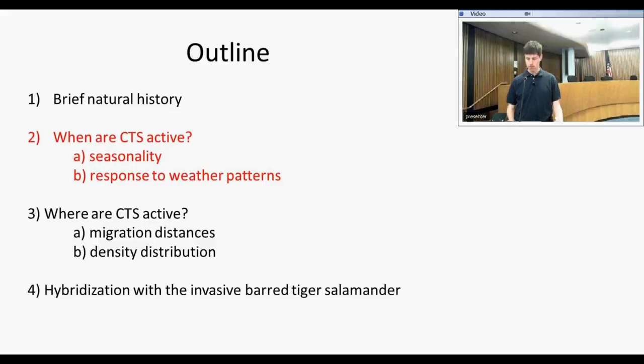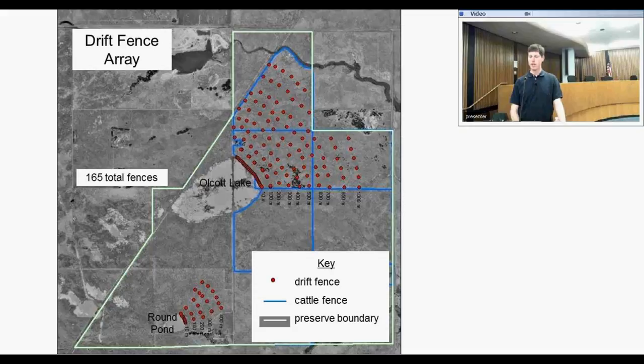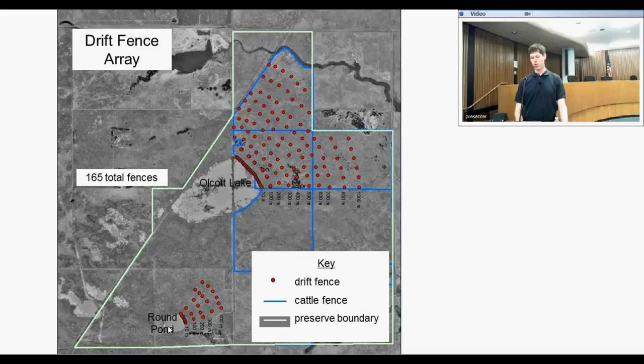Now I want to talk about when California tiger salamanders are active. A lot of the data I'm going to be presenting is from the Jepson Prairie Preserve. The preserve has two large tiger salamander breeding ponds: Olcott Lake, the largest California tiger salamander breeding pond, and Round Pond, which is much smaller — a more typical size for a playa pool, though still much larger than the average California tiger salamander breeding pond, which is now mostly man-made ponds originally designed to provide water for cattle.